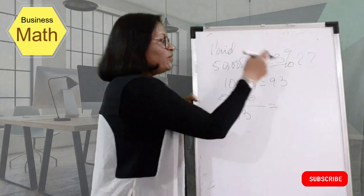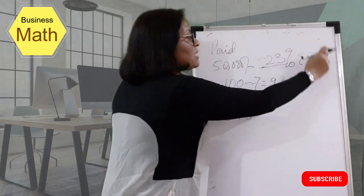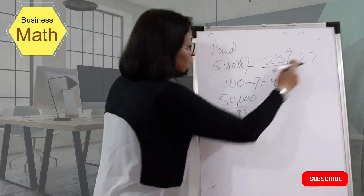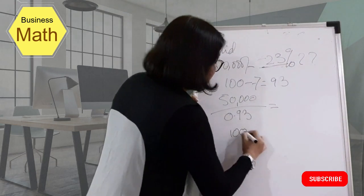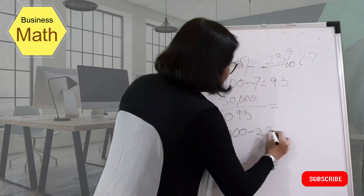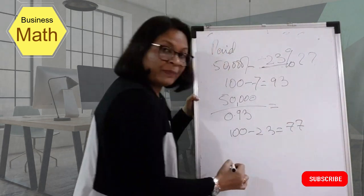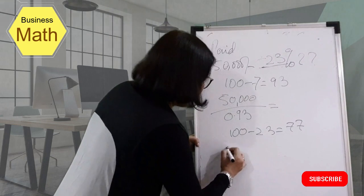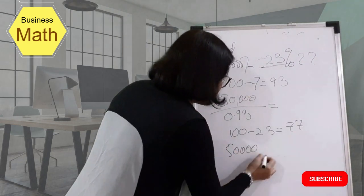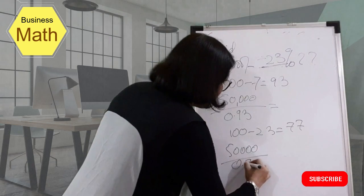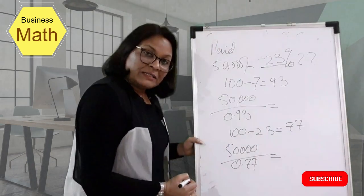Here is another example: a transaction value of 50,000 rupees was arrived at after receiving a 23% discount. What was the price before the discount? Using the shortcut: 100 − 23 = 77. So the answer is 50,000 ÷ 0.77.